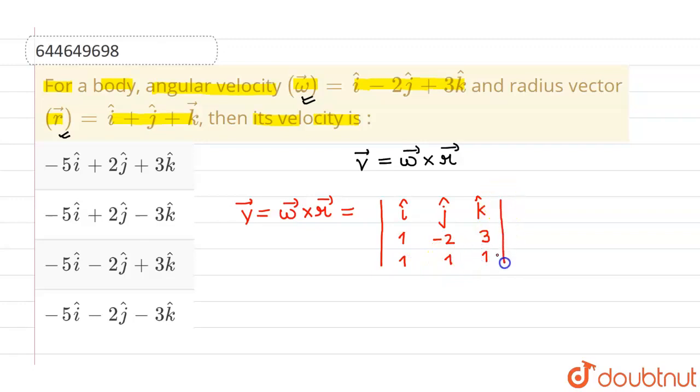So basically we have to solve this determinant in order to get the velocity vector. So from here I will be getting velocity vector as i cap times minus 2 minus 3.